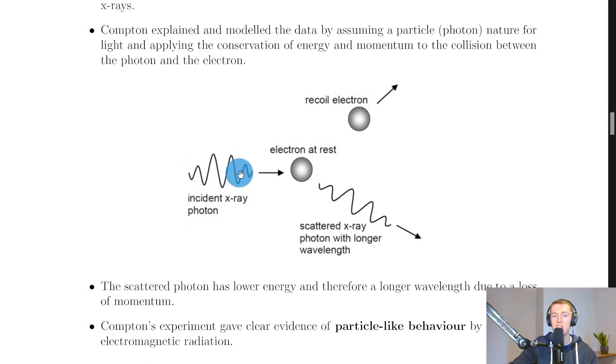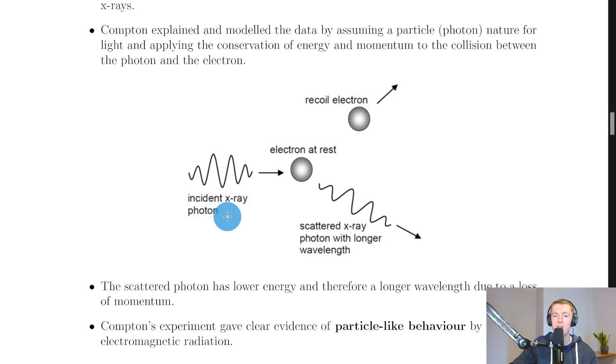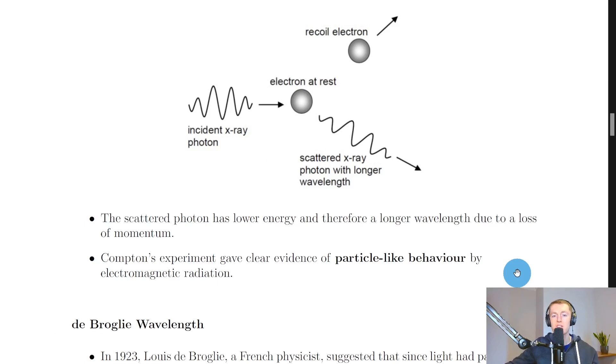So this involved thinking about the incident x-rays as being photons of light, i.e. particles rather than waves. So this gives us evidence of particle-like behaviour of light. Just to help you visualise this I'm going to show you a quick simulation. So here we have an incident photon on the right and this is going to strike the electron. And then you'll see the shift in the wavelength there and the deflected recoiling electron.